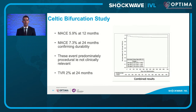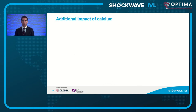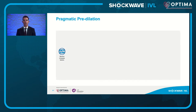The CELTIC bifurcation study performed in the UK showed a procedural MACE with culotte stenting in about 200 patients of roughly 5.9 to 7.3% at 24 months - most of which were procedurally related and not clinically relevant - with a target vessel failure of 2% at 24 months using culotte technique. Now let's consider the impact of calcium on these scenarios.